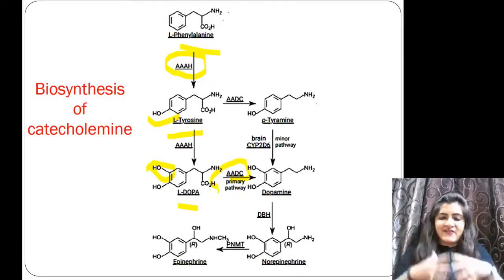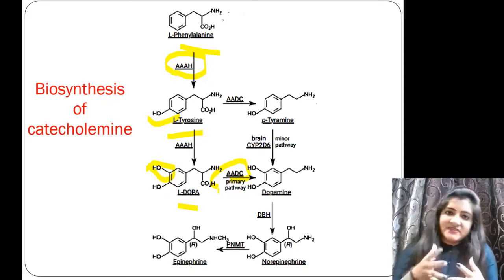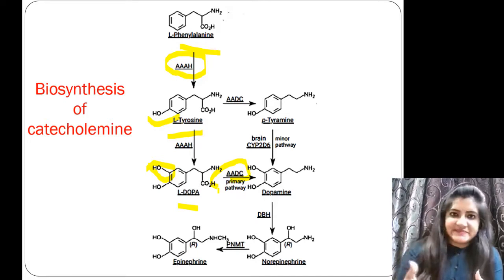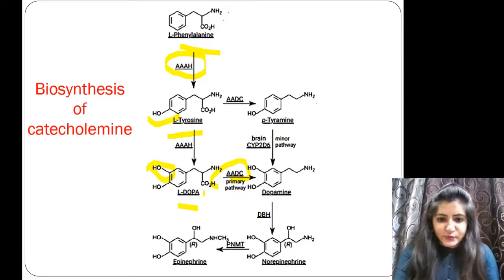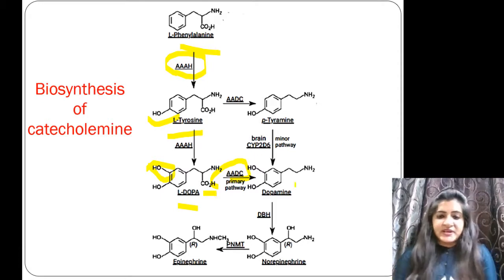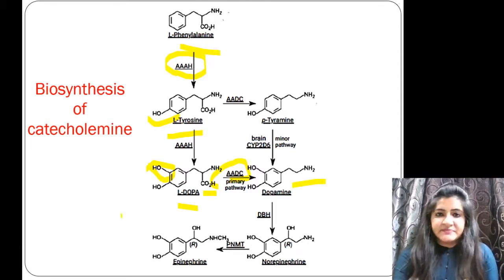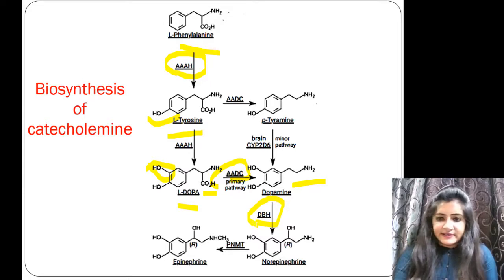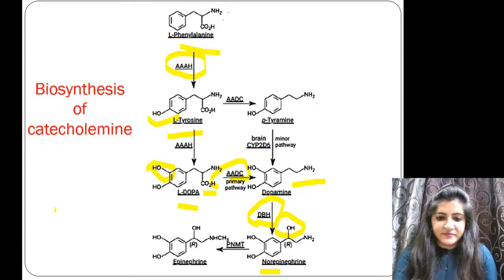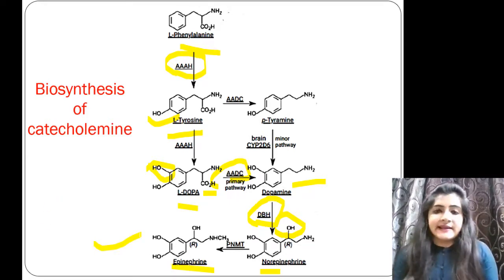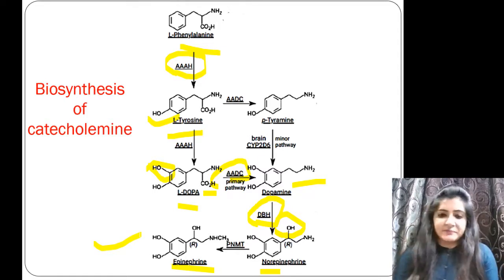From L-dopa, in one reaction, we get dopamine with the enzyme AADC — aromatic amino acid decarboxylase — which removes the CO2 group. From dopamine, with the enzyme DBH (dopamine beta-hydroxylase), a hydroxyl group is added to form norepinephrine. From norepinephrine we then get the structure of epinephrine.